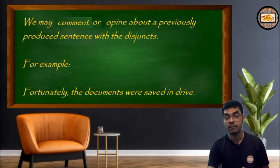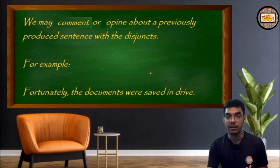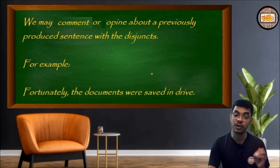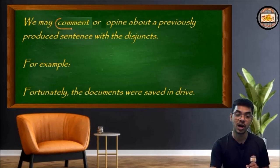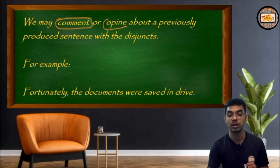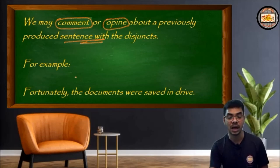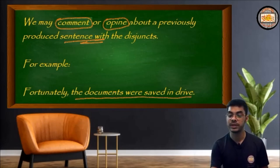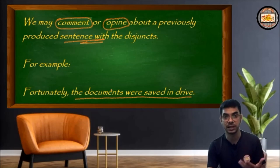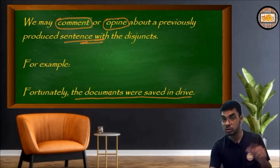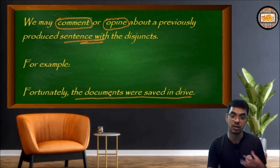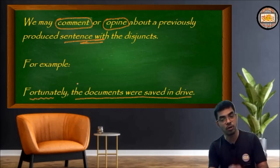To summarize: with disjuncts, we may comment on or give an opinion about a previously produced sentence. For example: 'Fortunately, the documents were saved in drive.' When you read 'the documents were saved in drive,' you understand there's context before it — something happened. We are commenting about it or producing an opinion with the word 'fortunately,' which is used here as a disjunct.